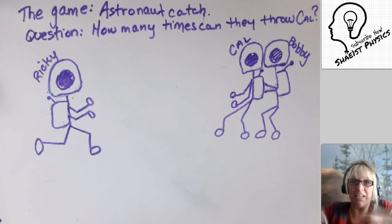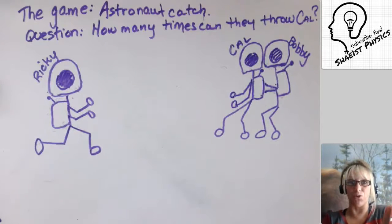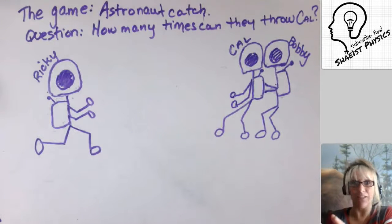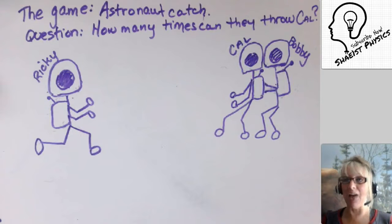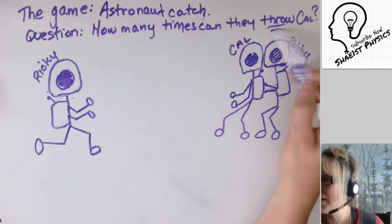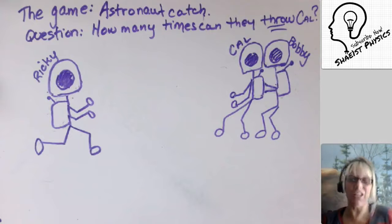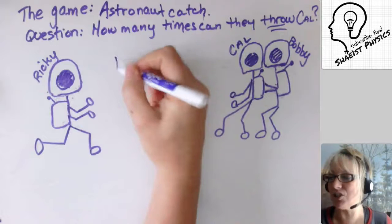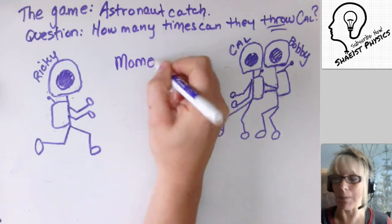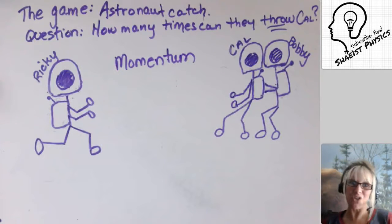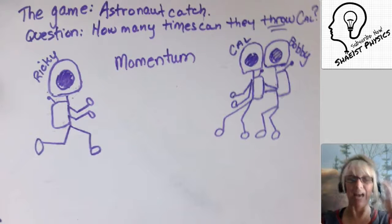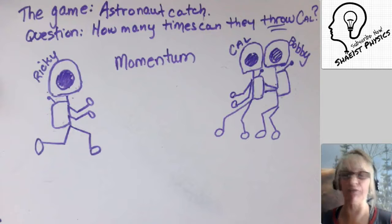Bobby is holding on to Cal, and he's going to throw Cal towards Ricky. Then Ricky is going to catch Cal and throw Cal back to Bobby. The question is: how many times can they throw Cal? We know Bobby can throw Cal at least once because that's the first action he takes. We're going to use momentum to answer this question — a lot less costly than actually taking three people out into space.